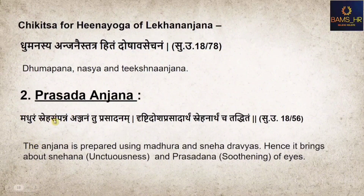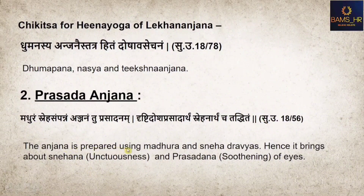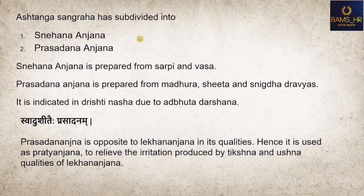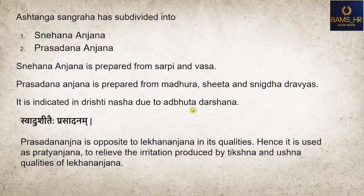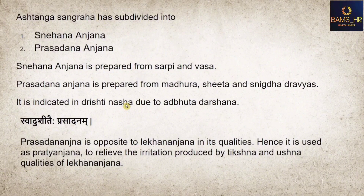Second type: Prasadhanjana. The Anjana is prepared using Madhuram Snehasampannam (sweet and unctuous substances). It brings about Snehana and Prasadhana — soothing of the eyes. Ashtanga Sangraha divides this into simple Prasadhana and Snehana Anjana. Snehana Anjana is prepared from Sarpi (ghee) and Vasa. Prasadhanjana is prepared from Madhura, Sheeta, and Snehasampannam substances. It is indicated in Drshti Nasha due to Adbhuta Darshana. Prasadhanjana is the opposite of Lekhananjana in its qualities and is used as Patanjana to relieve irritation from Lekhananjana.